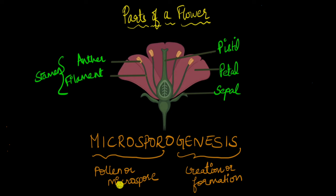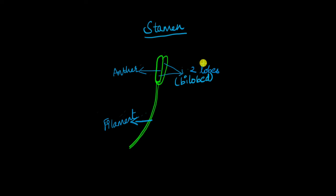Microspore refers to the pollen and genesis means creation or formation, so microsporogenesis is the creation or formation of pollen. A typical stamen of an angiosperm has two parts: the anther and the filament. The filament is a stalk-like structure that attaches the stamen to the flower. The anther is made up of oblong structures called lobes, and many anthers of angiosperms are bilobed — made up of two lobes — because bi means two.